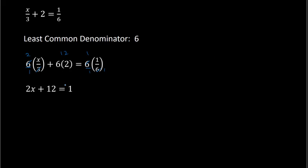To solve, I can use reverse order of operations. So I subtract 12 from both sides, which gives me 2x equals negative 11. Then I divide both sides by 2, so x equals negative 11 over 2. And that is my solution. Notice that multiplying by the least common denominator gets rid of all the fractions.